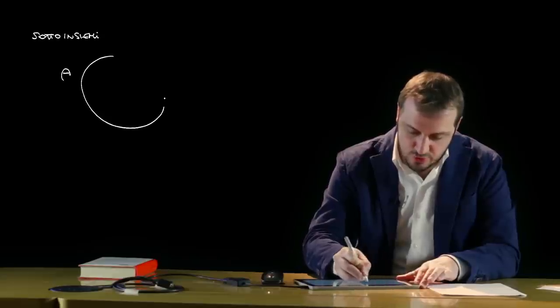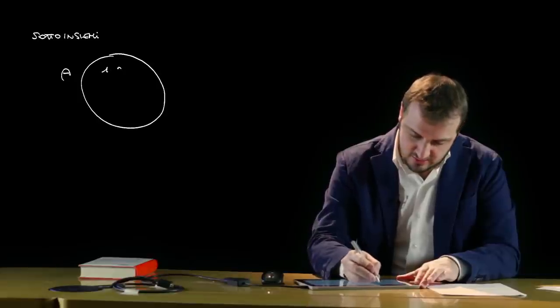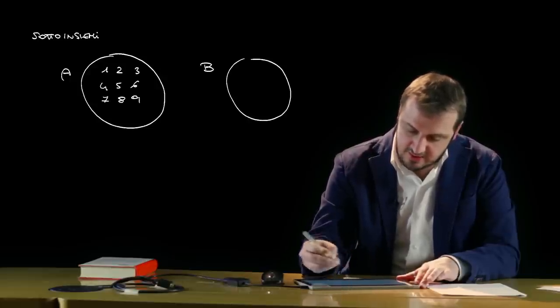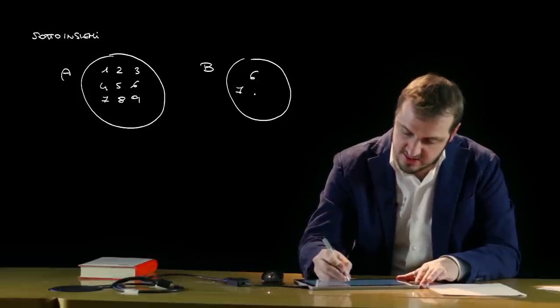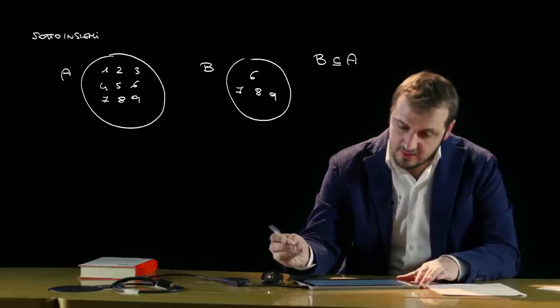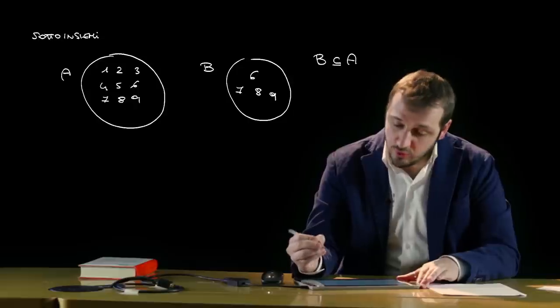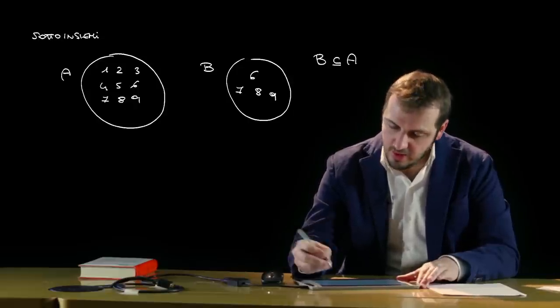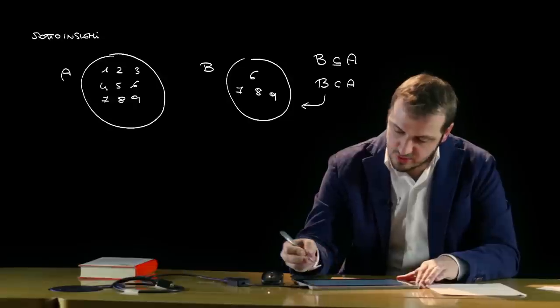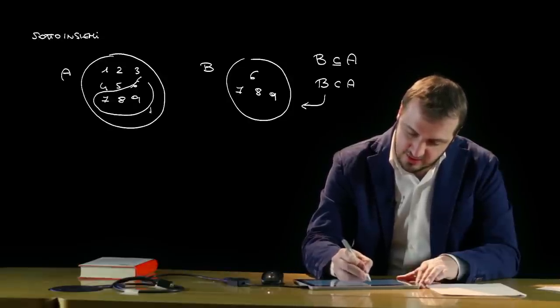Ci sono poi i sotto-insiemi, cioè quegli insiemi inclusi in altri insiemi più ampi. Per esempio, prendiamo l'insieme A costituito da tutti i numeri compresi fra 1 e 9, e l'insieme B costituito esclusivamente dai numeri fra 6 e 9: 6, 7, 8 e 9. Diremo che B è un sotto-insieme di A. Se tutti gli elementi di B sono inclusi in A ma esistono elementi di A non presenti in B, parleremo di insieme strettamente incluso in A — ed è proprio il caso di questo esempio.